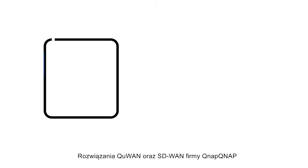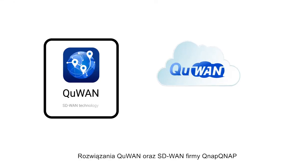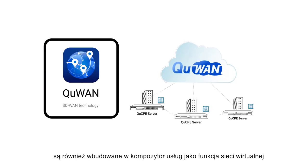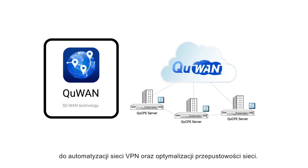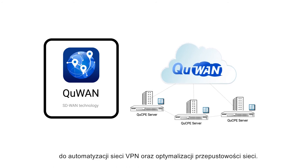QWAN, QNAP's SD-WAN solution, is also built into the Service Composer as a virtual network function for auto-mesh VPN and network bandwidth optimization.